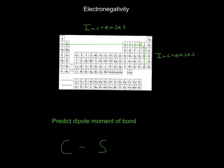For this problem, we need to predict the dipole moment of C and S. Electronegativity increases from left to right until fluorine and increases up until fluorine.